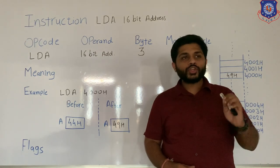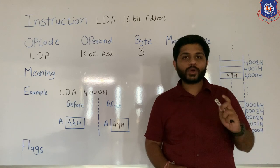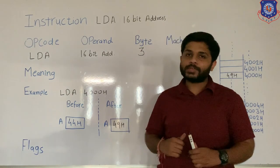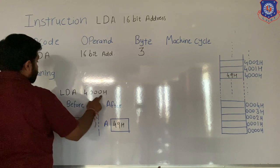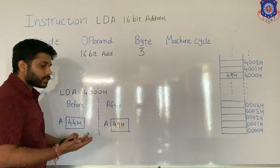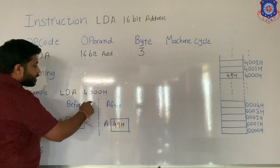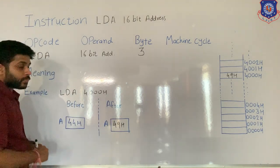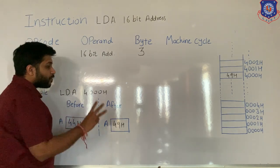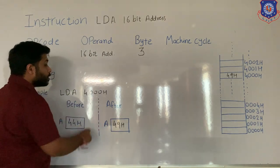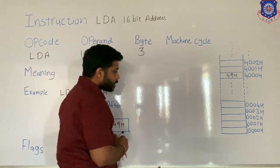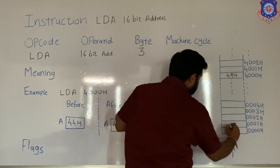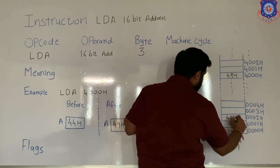To understand machine cycle, you have to understand every process of a particular instruction. When LDA 4000H is given to the microprocessor, the instruction is stored in memory from the starting location. Because this instruction is 3 bytes, it will occupy 3 memory locations. In the first location, LDA opcode will be stored; in the second location, 00H; and in the third location, 40H.